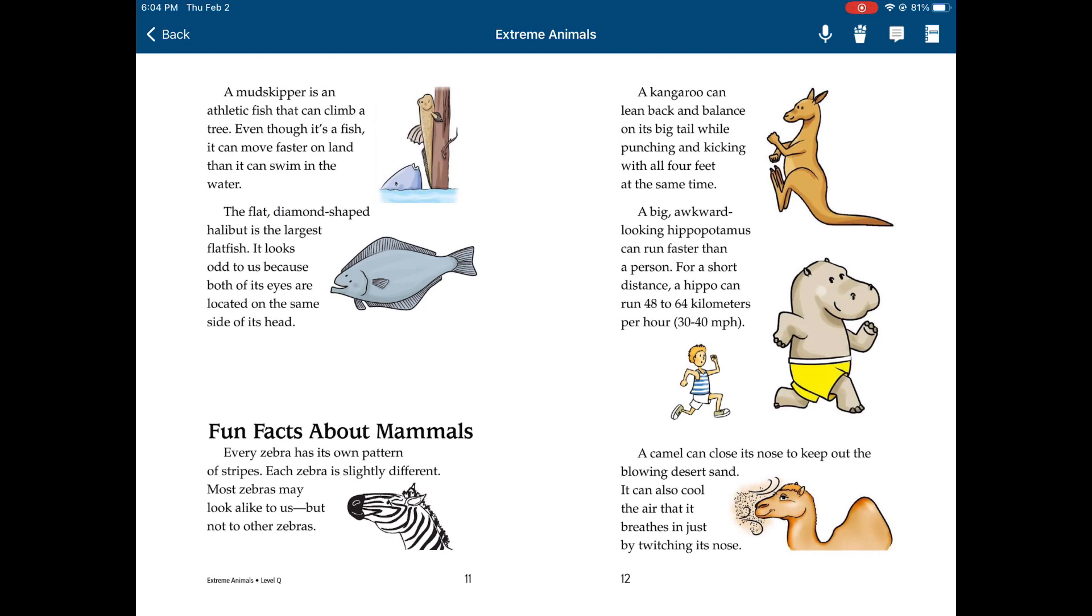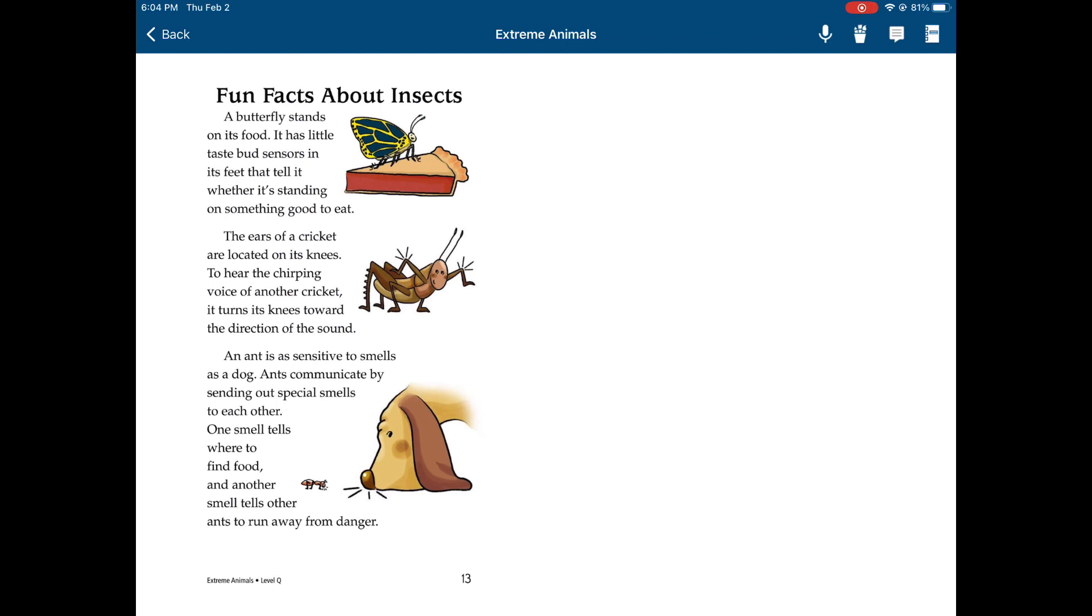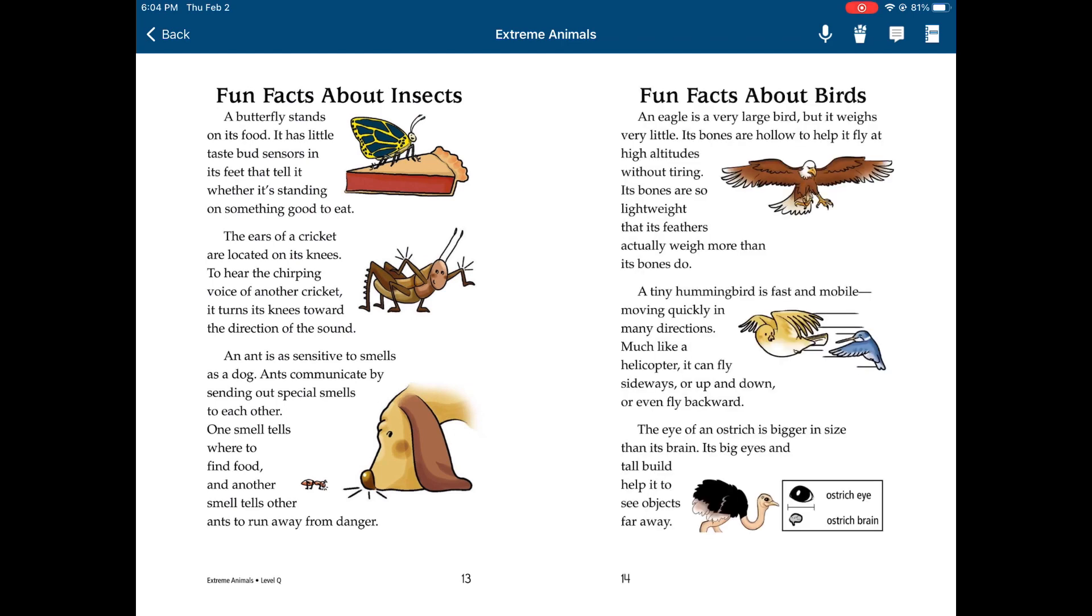Fun facts about insects. A butterfly stands on its foot. It has little taste bud sensors in its feet that tell it whether it's standing on something good to eat. The ears of a cricket are located on its knee. To hear the chirping voice of another cricket, it turns its knee toward the direction of the sound. An ant is as sensitive to smell as a dog. Ants communicate by sending out special smells to each other. One smell tells where to find food, and another smell tells other ants to run away from danger.